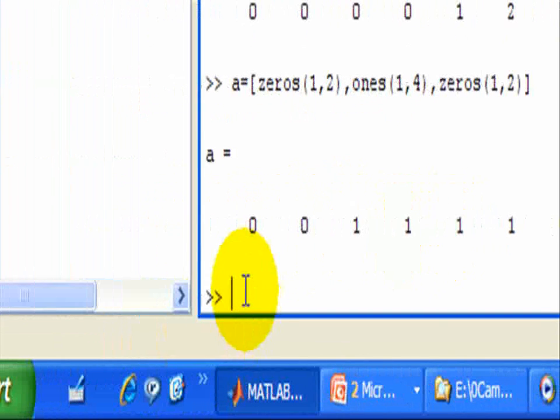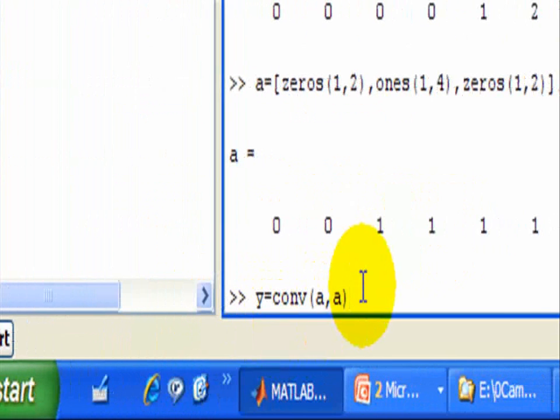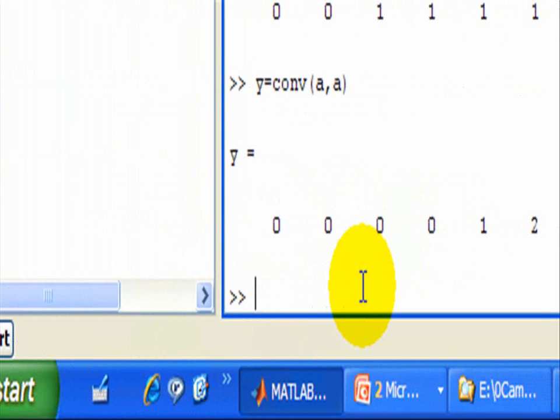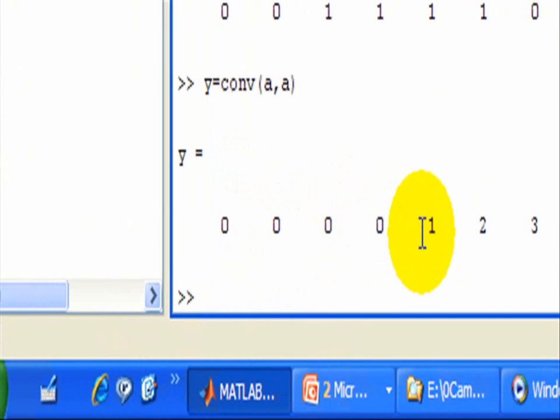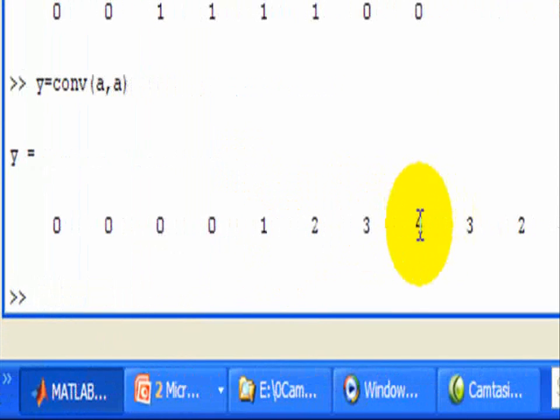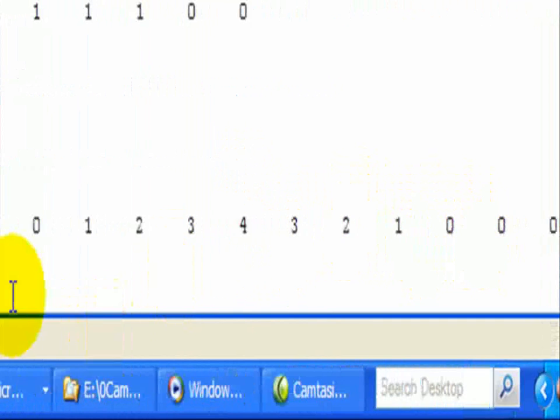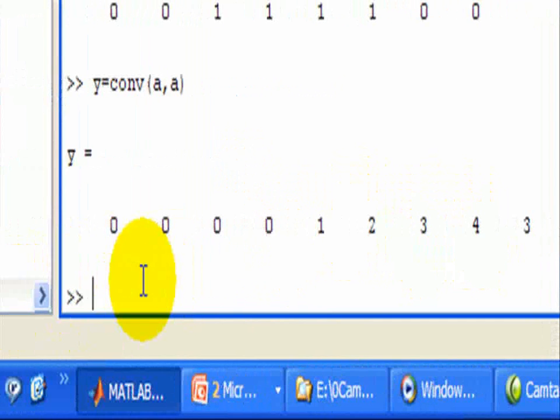Now we're going to convolve it with itself, and we should have like a triangle function. So y equals the convolution between A and A, and what we should have is a triangular. Here at our output y, we see it starts at 0 and begins to ramp up, and then starts to ramp down, and then 0 again. And that's the resulting output due to the convolution.